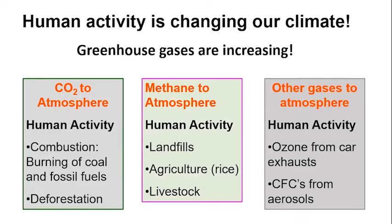We've now described what happens in the natural setting, including what we call human activities. Let's call it directly, therefore, into human-induced climate change. The human activities, like we said, are changing our climate, and largely as a result of the increase in greenhouse gases. For example, CO2 comes from the combustion of coal and fossil fuels and deforestation.